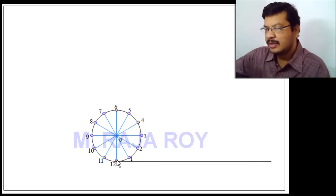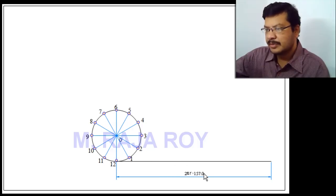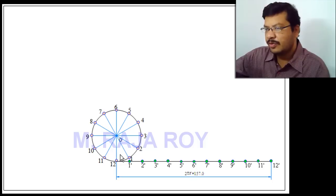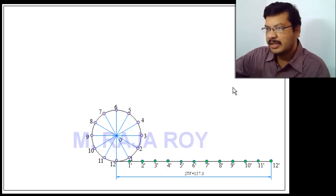Then draw a tangent to the circle at the twelfth division, and the length of this tangent is 2πr. With that 2πr length, draw the tangent and divide it into the same number of equal parts. Here the circle is divided into 12 parts, so divide this tangent also into 12 parts. Give the numbers along the tangent such that when winding, point 1-dash coincides with point 1, and point 2-dash coincides with point 2.